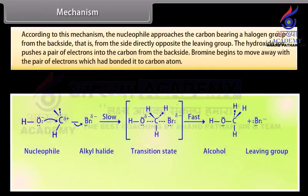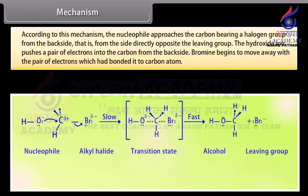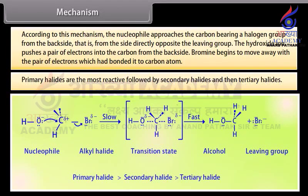According to this mechanism, the nucleophile approaches the carbon bearing the halogen group from the backside, that is, from the side directly opposite the leaving group. The hydroxide ion pushes a pair of electrons into the carbon from the backside. Bromine begins to move away with a pair of electrons which had bonded it to the carbon atom. Primary halides are the most reactive, followed by secondary halides, and then tertiary halides.